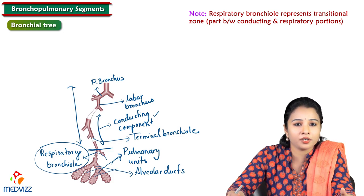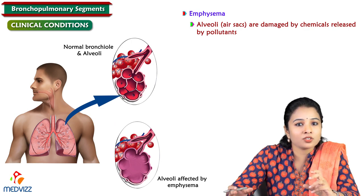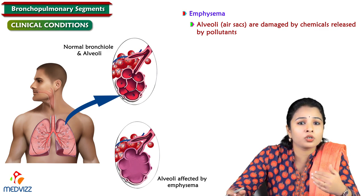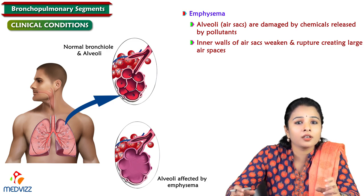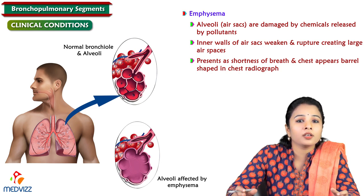A clinical condition called emphysema occurs when alveolar sacs are damaged by chemicals released by pollutants. In chronic smokers, the inner walls of the alveolar sac become weakened and rupture, creating large air spaces. Clinically, it presents with shortness of breath and the chest appears barrel-shaped on chest radiographs.